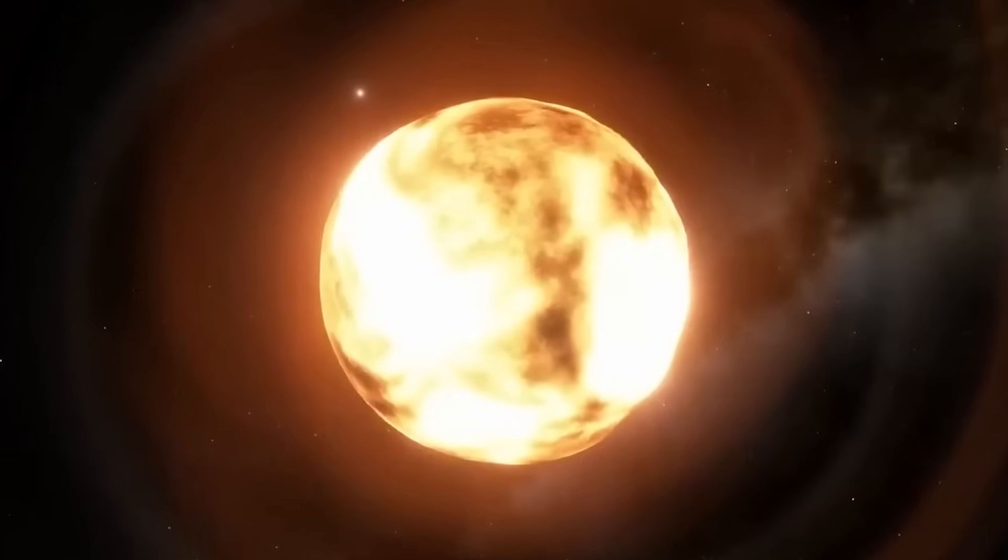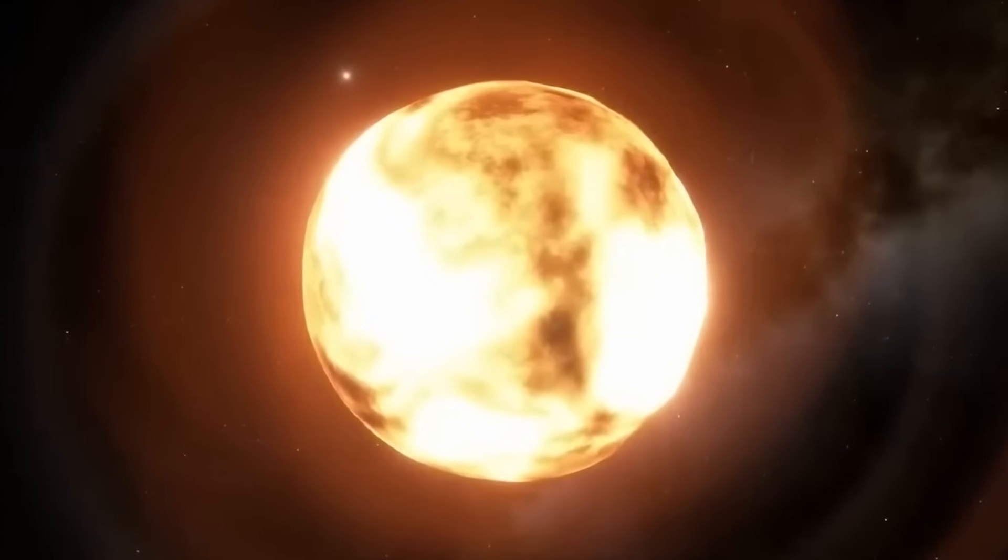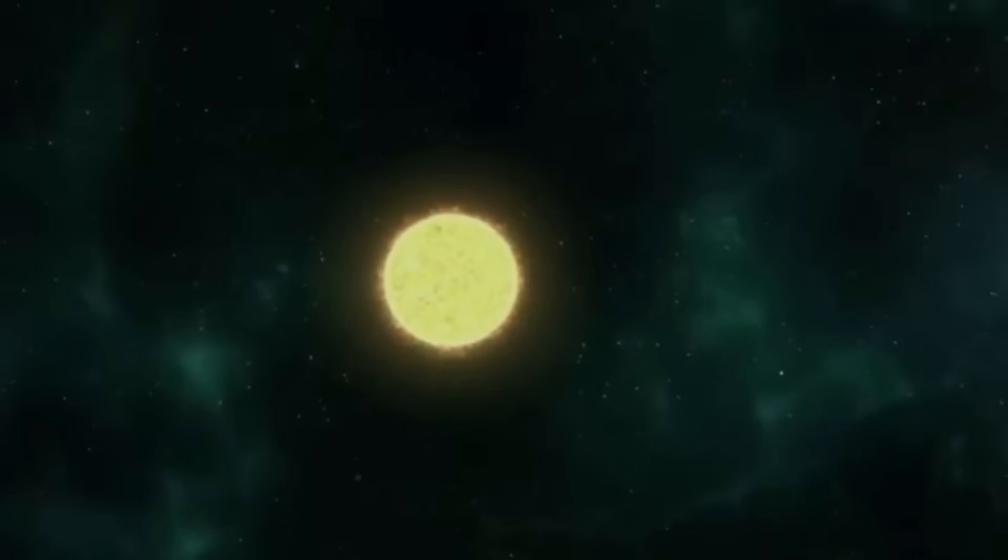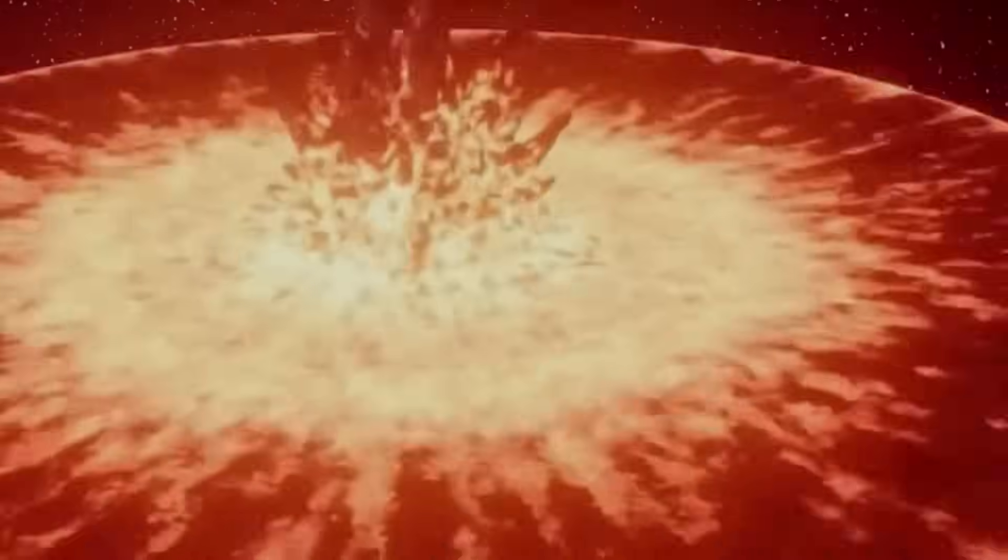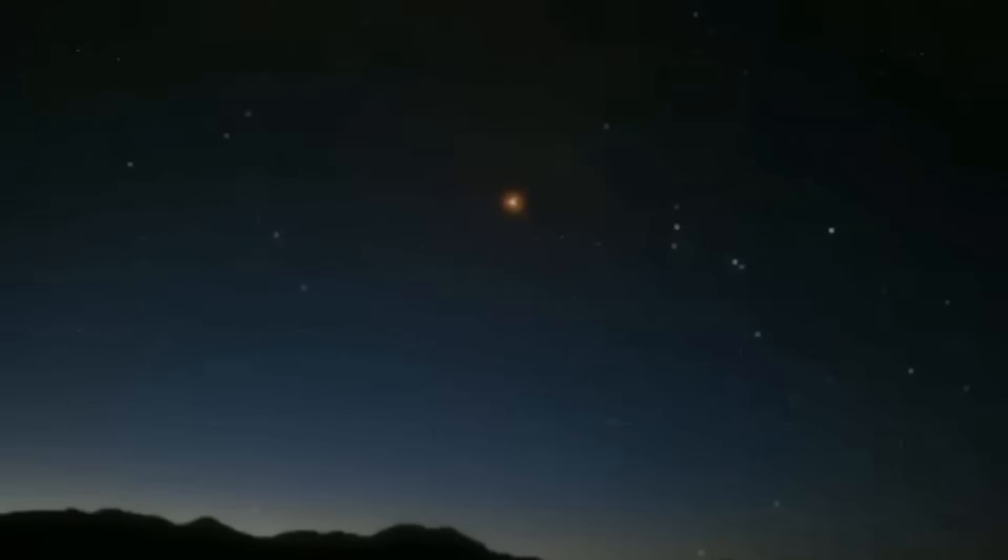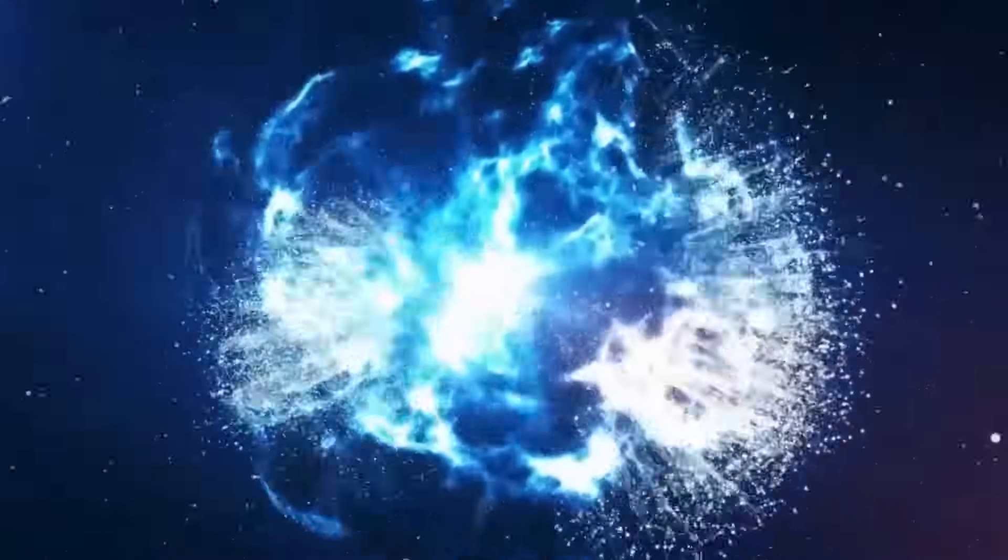This process must continue through oxygen, silicon, and finally, iron before the star's core succumbs to its gravitational pull, resulting in a cataclysmic explosion. Given that Betelgeuse is situated 650 light-years away, any current supernova event would only become visible to us after 650 years, constrained by the speed of light. Hence, it is highly improbable that we would witness the supernova in our lifetime.